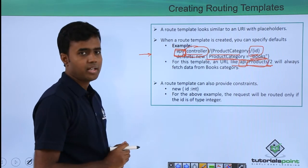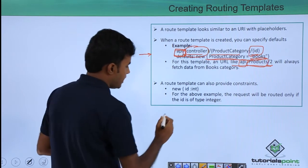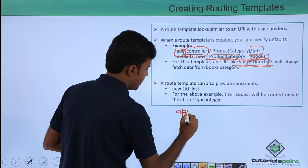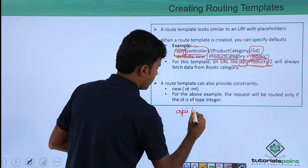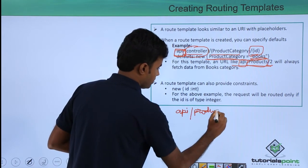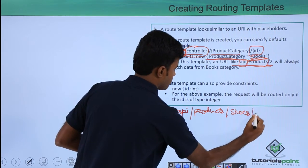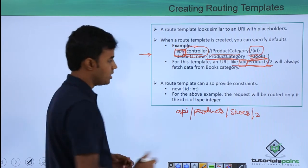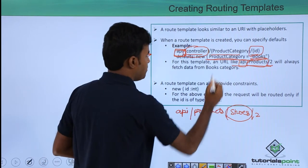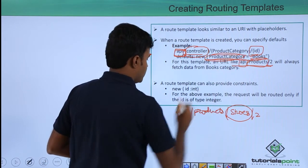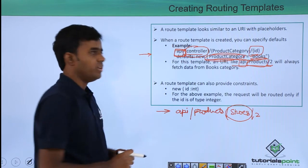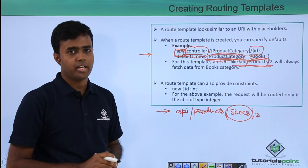But suppose that instead of that URL, I add a URL similar to API slash products slash shoes slash two. Here in this case, shoes will be mapped to product category, and this particular request will fetch data from the shoes category.